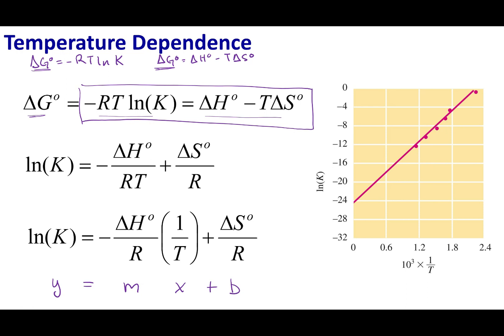Here is the graphical trick: on the X axis I'm going to plot 1 over T, and on the Y axis I'm going to plot values of ln K. What I create is called a reciprocal plot, because I'm plotting 1/T on the X axis and ln K on the Y axis.